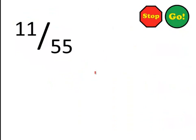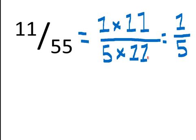Press on the stop sign and see how you do. Let's see how you did. Well, 11 fifty-fifths can be factored as 1 times 11 and 5 times 11. The 11s cancel each other out, becoming the number 1. So 1 times 1 is 1, and 5 times 1 is 5.